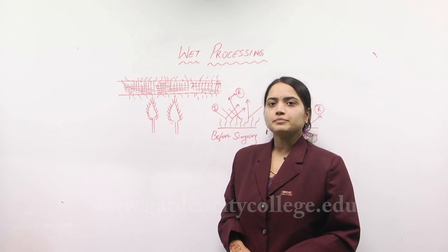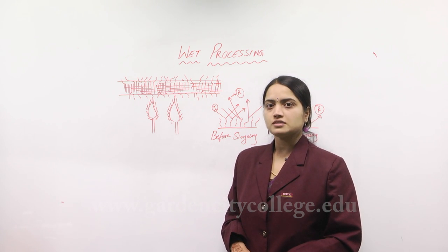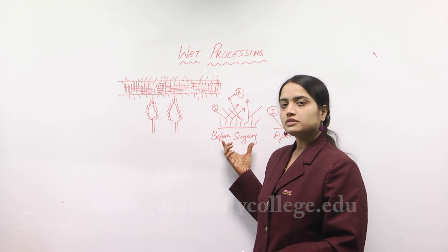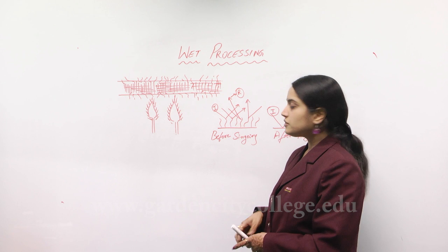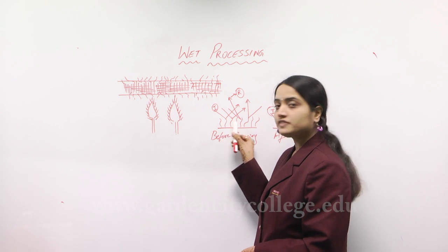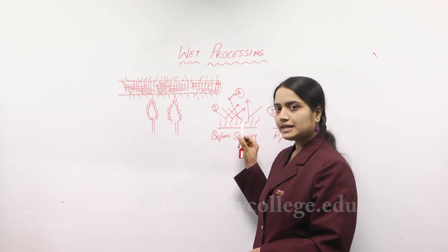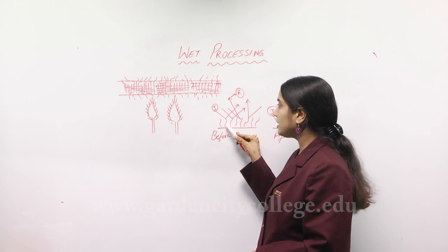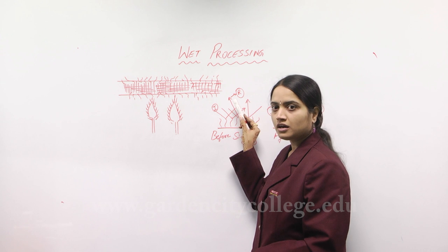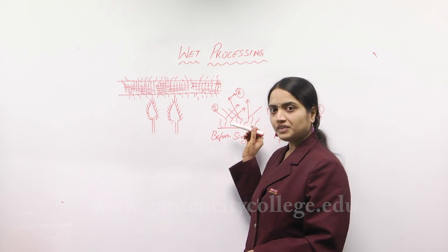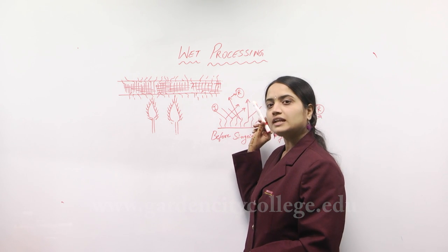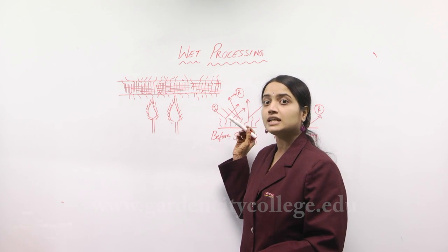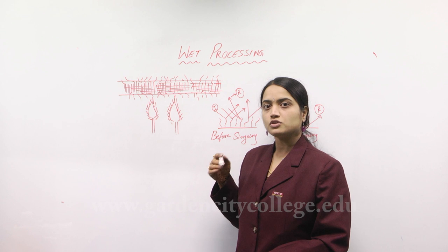When we have raw material it has protruding fibers on its surface. When incident light I hits the material, it does not reflect back in an even pattern R. Since the reflection is uneven, the light gets distracted, the material is not shiny, and the luster of the material is lost — hence the material looks more dull.